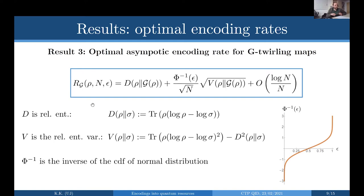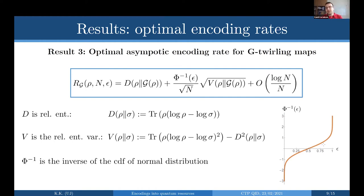Question: for finite n you often get a lower rate than the asymptotic — is it possible to also get a higher rate? Yes, you can get a higher rate. The only term that can be negative is the variance term times Phi^{-1}(epsilon). If you want it positive you need to allow for error bigger than one half. So it is achievable if you allow for a very big error. Thanks for the good questions.